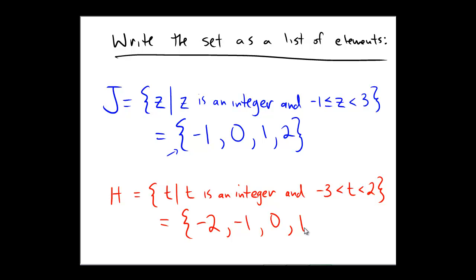And yet again, we do not include the right endpoint. 2 is not acceptable here because 2 is not less than 2. 2 is equal to 2. So this is where we have to end. And so this set would be negative 2, negative 1, 0, 1. 2 is not acceptable.